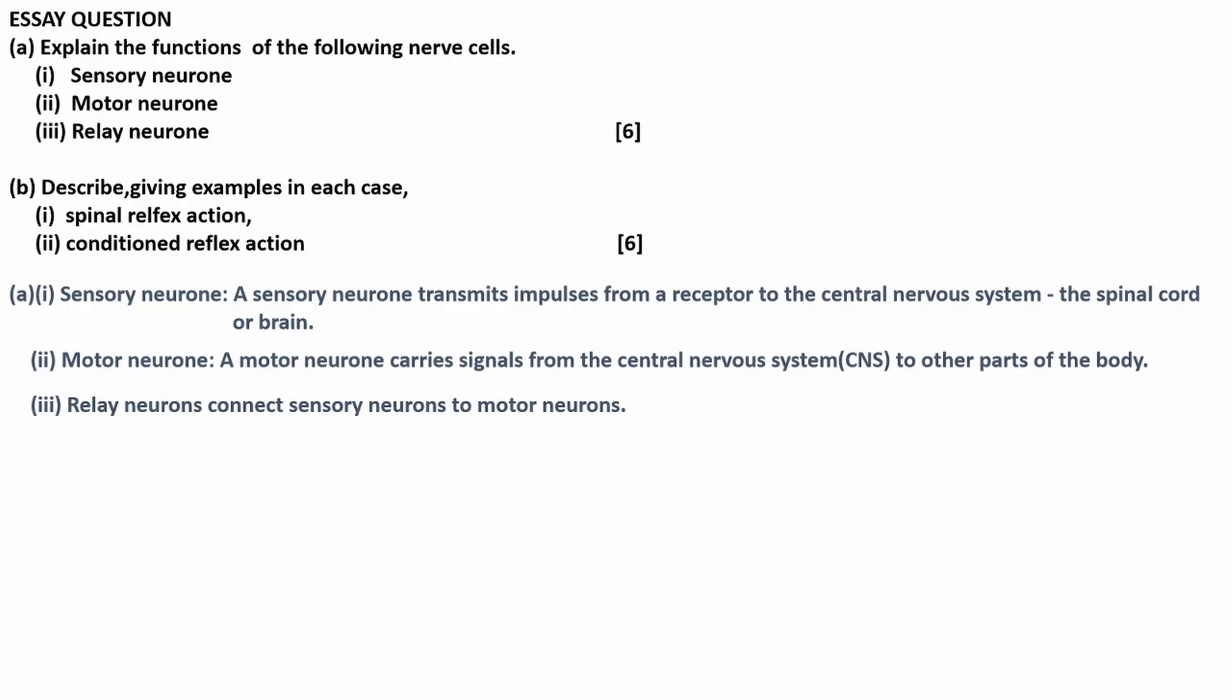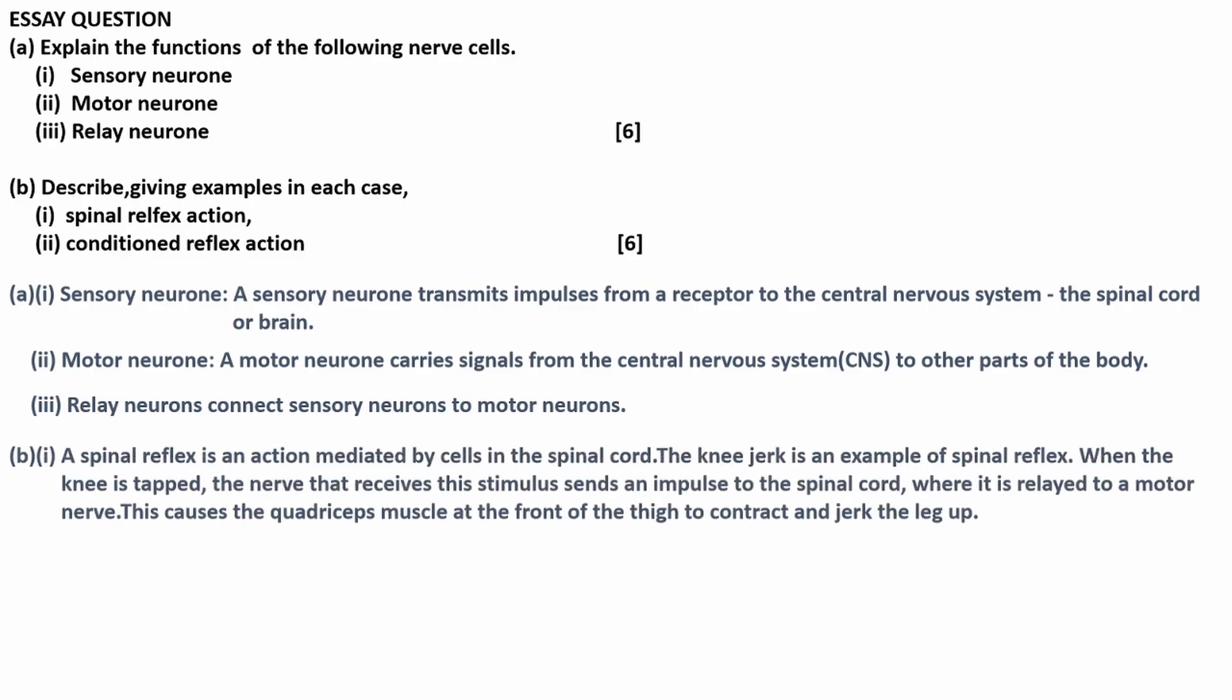Then part B, describe giving examples in each case spinal reflex action. So a spinal reflex is an action mediated by cells in the spinal cord. The knee jerk is an example of a spinal reflex. When the knee is tapped, the nerve that receives this stimulus sends an impulse to the spinal cord where it is relayed to a motor nerve. This causes the quadriceps muscles at the front of the thigh to contract and jerk the leg up.